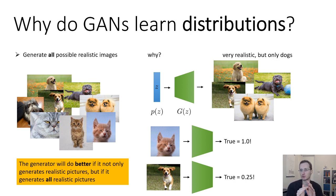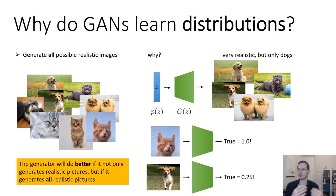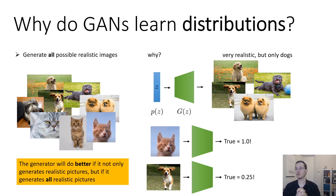For full disclosure, I should mention the mode collapse problem. In practice, GANs do often suffer from mode collapse — a type of overfitting where they fail to capture the entire distribution, generating only dogs instead of cats and dogs. In that case the discriminator will not output 50/50; it will figure out the failure. Sometimes due to optimization difficulties or overfitting, you might not actually match the distribution. But if you correctly optimize the game, you should match the distribution well.